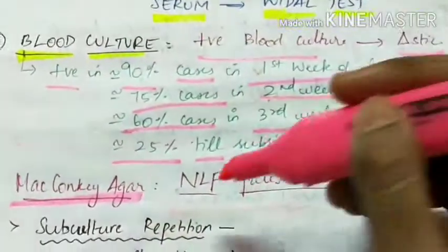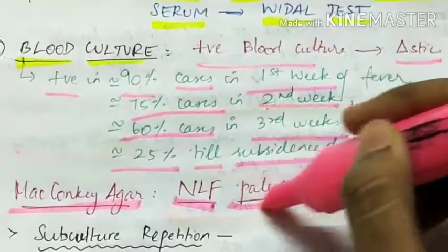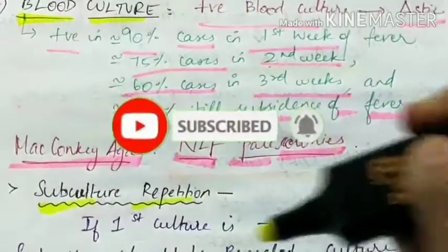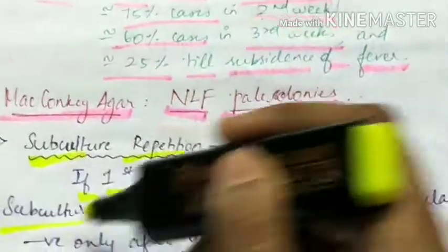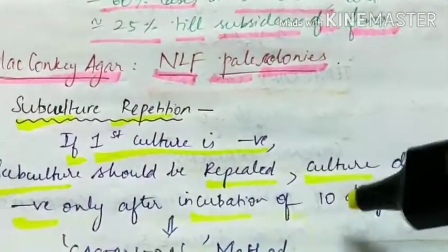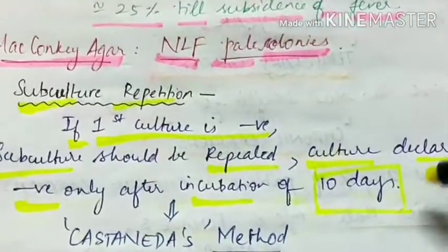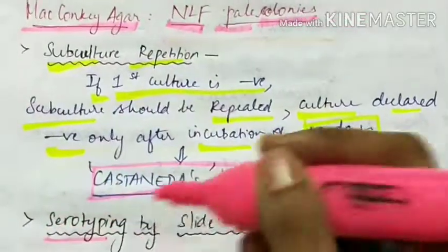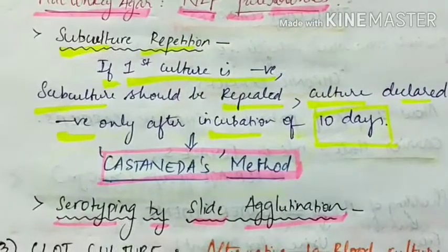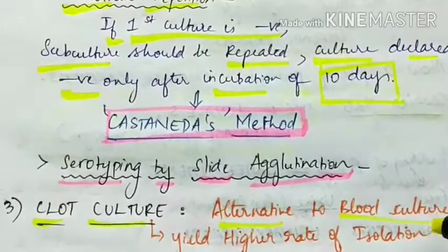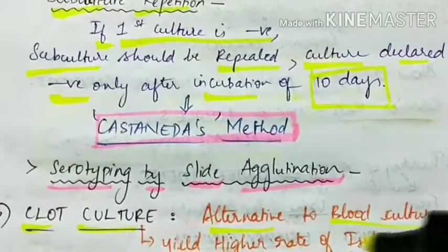On MacConkey agar, there are non-lactose fermenting pale-colored colonies. Subculture repetition should be done — if the first culture is negative, subculture should be repeated and the culture is declared negative only after incubation of 10 days. This subculture is performed using the Castaneda method. Alternatively, a clot culture can be performed instead of blood culture, and it also yields a higher rate of isolation of the bacilli.